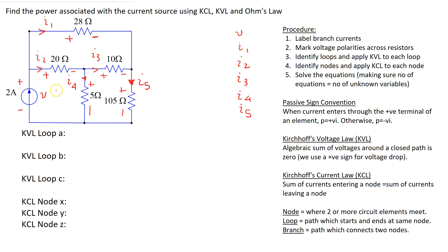We can identify three loops: Loop A, Loop B, and Loop C. Also, we can identify three nodes in this circuit. Let's label them node X, node Y, and node Z.